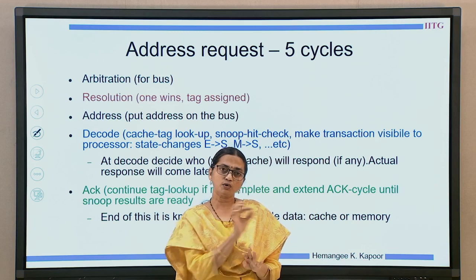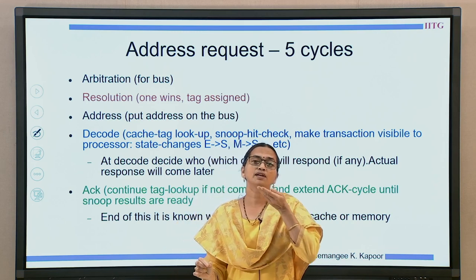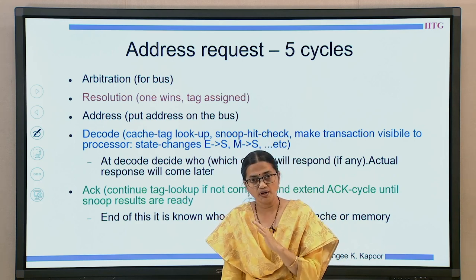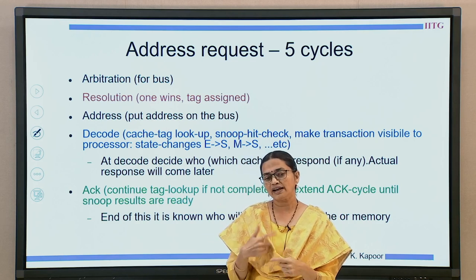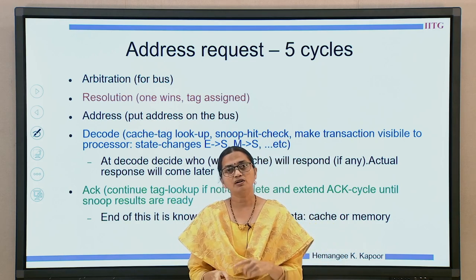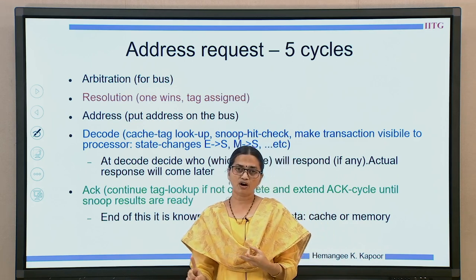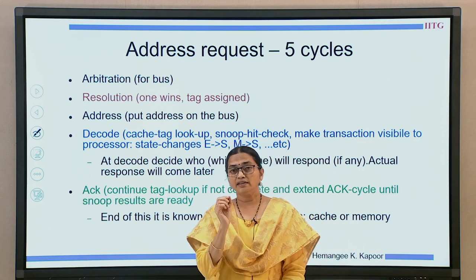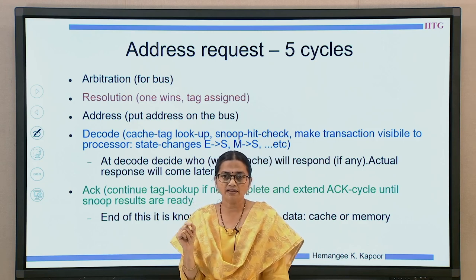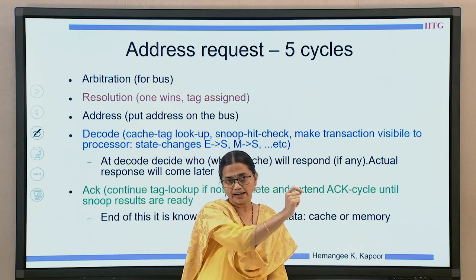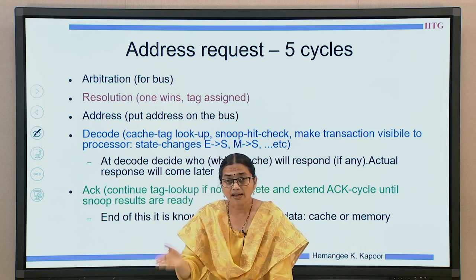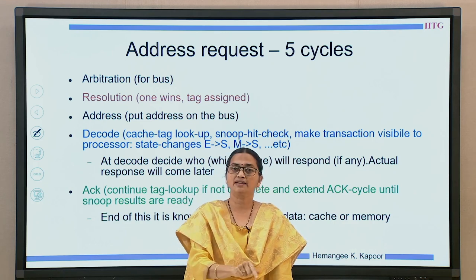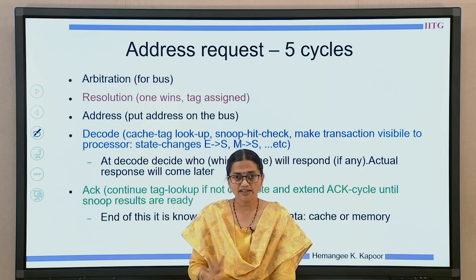In the fourth cycle, this request is traveling and other caches read this request — they will now compare this address with their caches, doing a bus snoop. You compare your cache and take an appropriate decision: should this cache reply with data, should it invalidate the block, or should it ignore the request? All this processing is done in the decode cycle — the fourth cycle. By the end of the fourth cycle, every processor connected to the bus will know whether they should stay in the same state or change state, and also whether they are supposed to supply the data or memory will give the data.